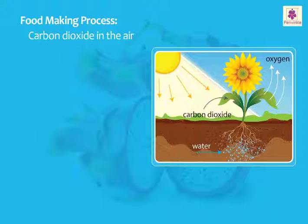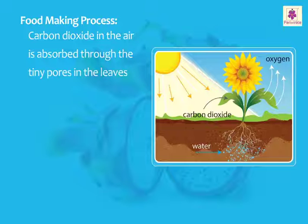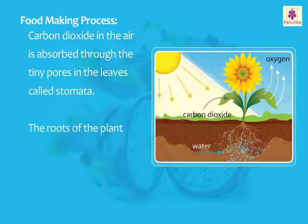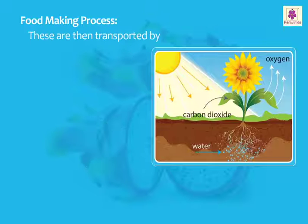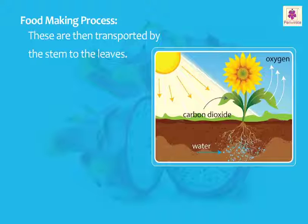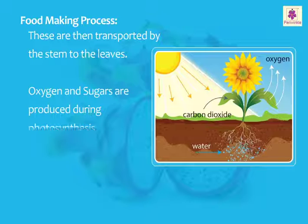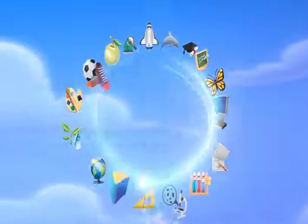Carbon dioxide in the air is absorbed through the tiny pores in the leaves called stomata. The roots of the plant absorb water and minerals from the soil. These are then transported by the stem to the leaves. Oxygen and sugars are produced during photosynthesis.